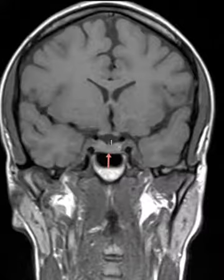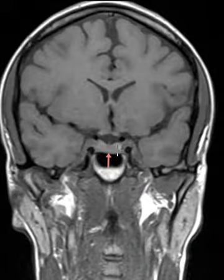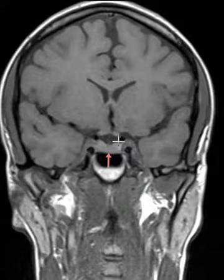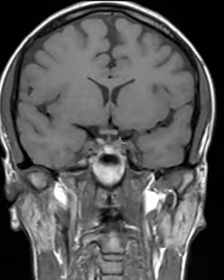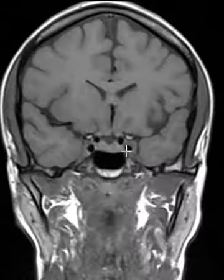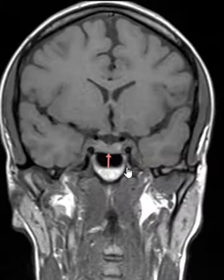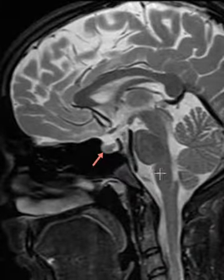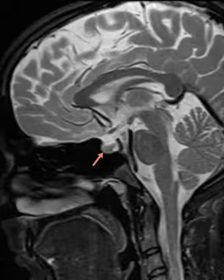When there's a pituitary mass, one side will often be larger than the other, or it'll bulge up into the suprasellar cistern, this area above it. Or the pituitary stalk will be deviated to the right or left. So this is what we look for, and this is how you read an MRI of the pituitary gland.